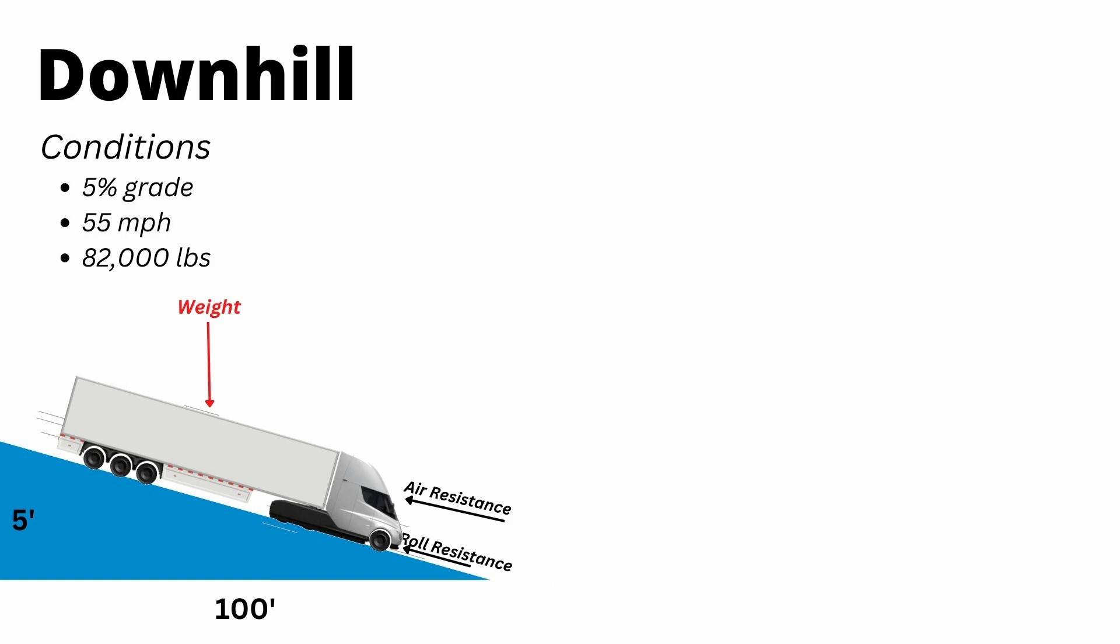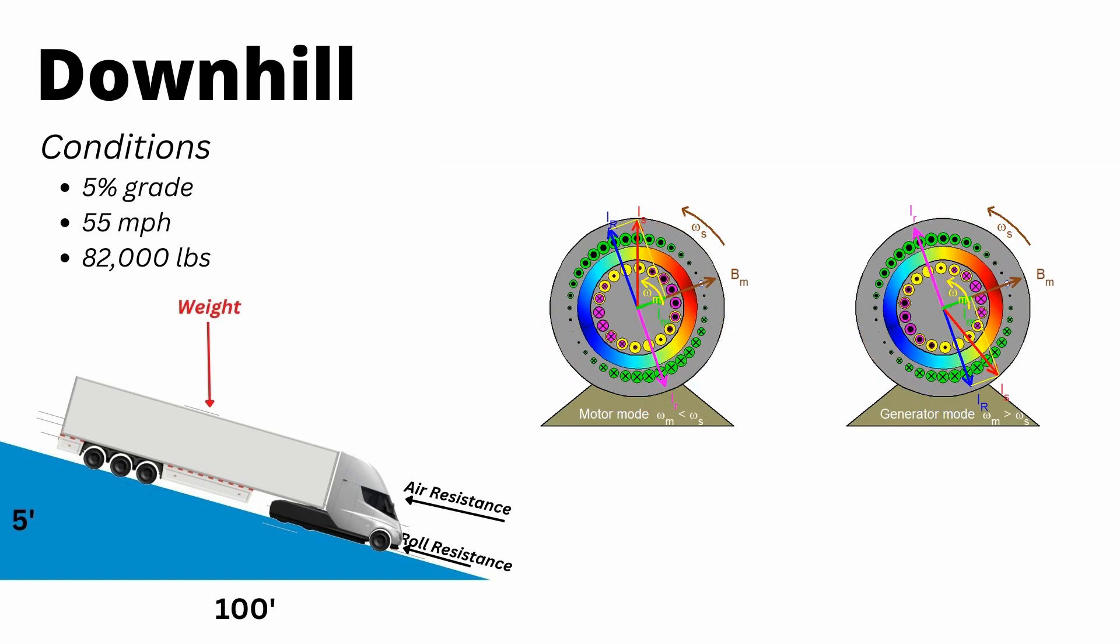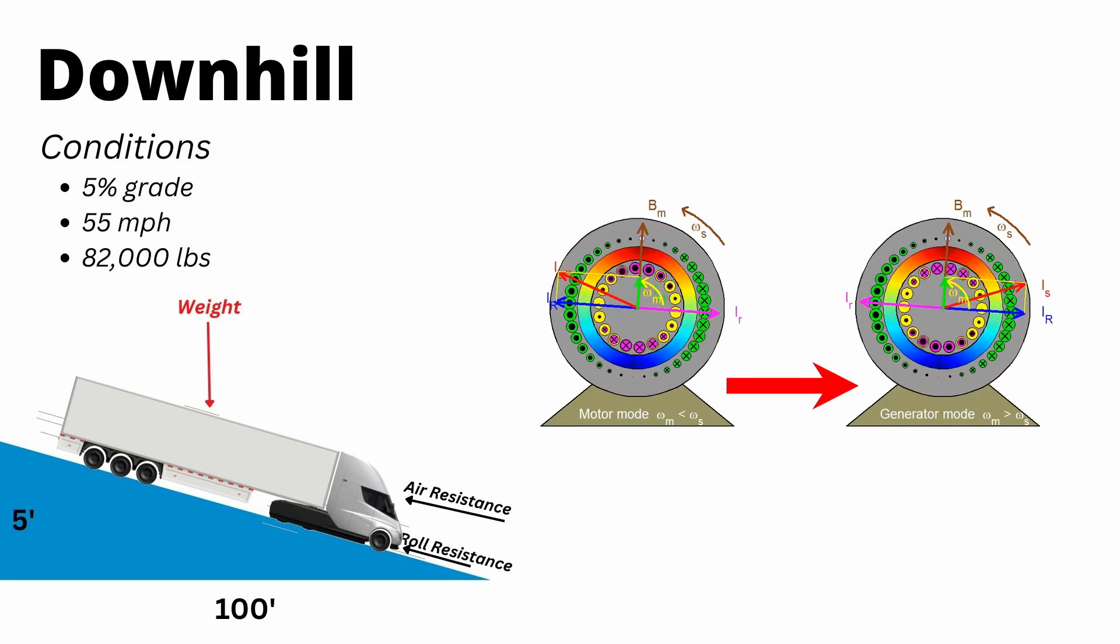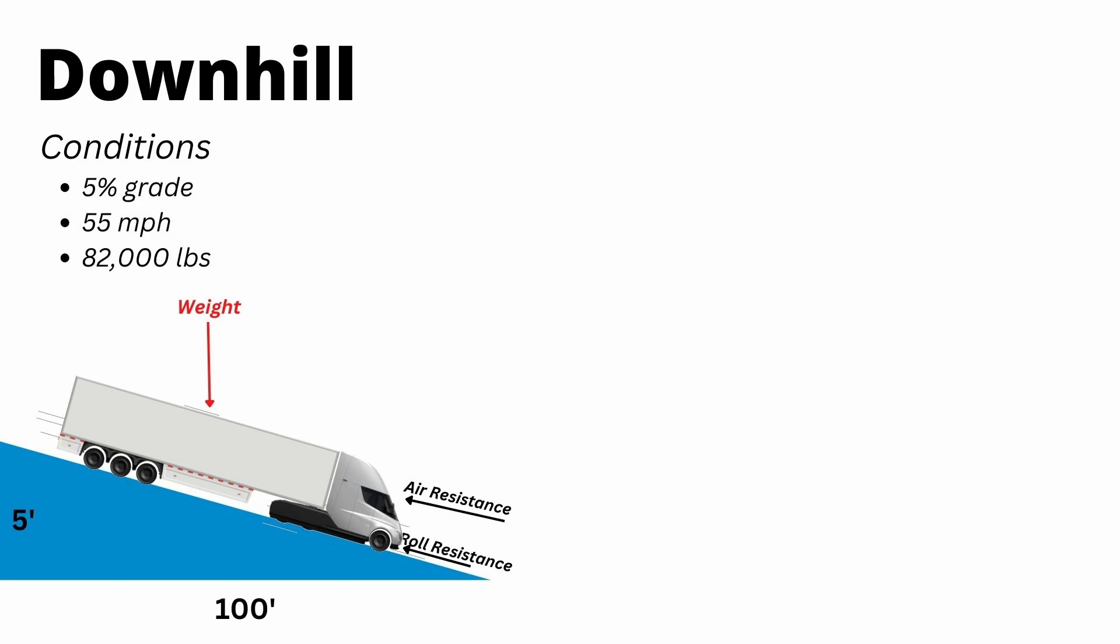So uphill is pretty cool, but downhill gets even cooler. Electric cars have the ability to regenerate power. Their electric motors basically turn into generators and turn that kinetic energy back into potential energy. I've set up basically the downhill scenario of before: 5% grade, fully loaded, going 55 miles an hour. But this time we have our weight force acting in the positive direction.